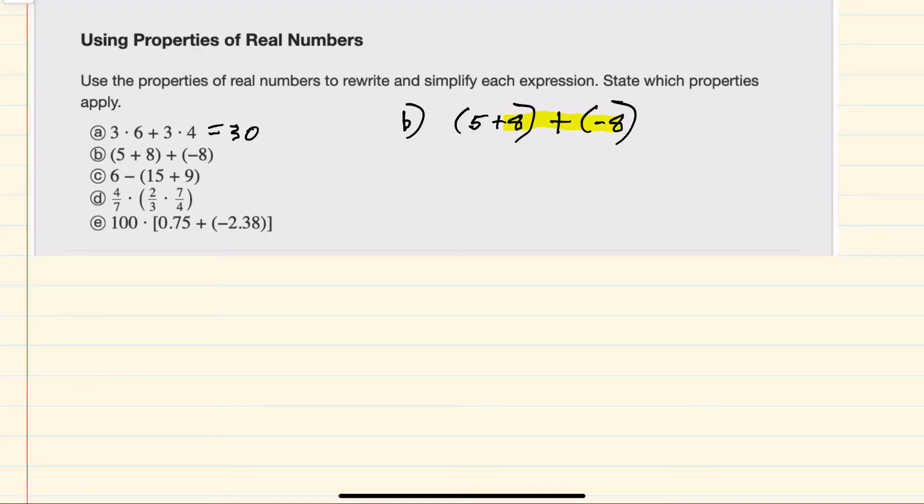So the associative property would give me 5 plus 8 plus negative 8, just changing the association to doing the second addition first. The advantage here is that 8 plus negative 8 is 0, so 5 plus 0 is 5.